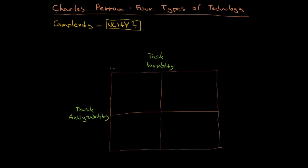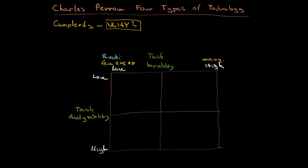We are going to have low variability and low analyzability, and then high and high again. What does it mean when we say that task variability is low? Well, there are going to be few exceptions. On the other hand, there are going to be many exceptions. A task with few exceptions is going to be a routine task, while on the other hand we have a non-routine task.